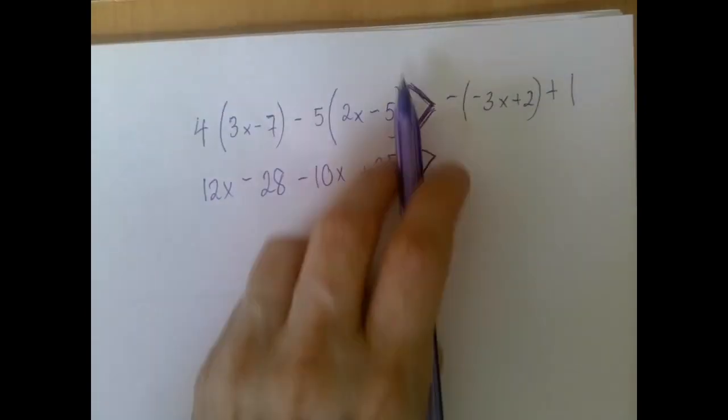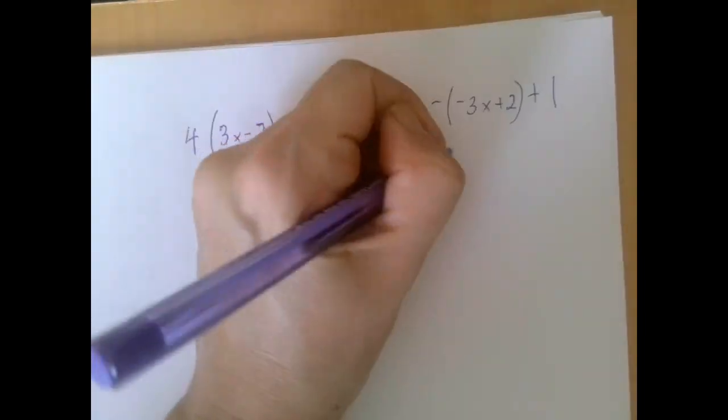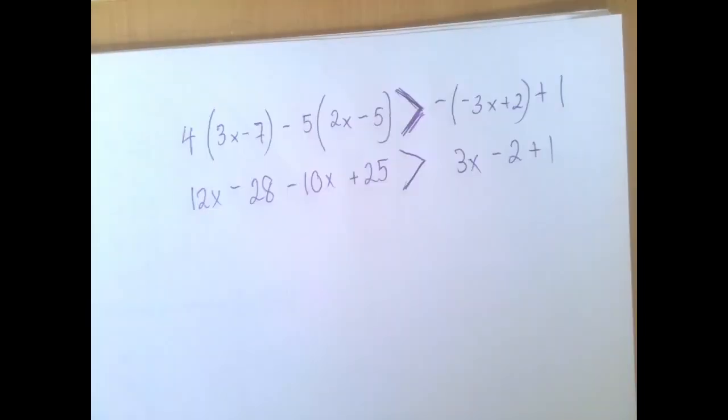Just like with equation, try to align it around the inequality sign. So this is plus 3x minus 2 plus 1.